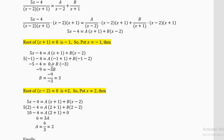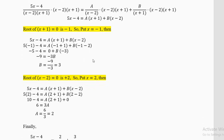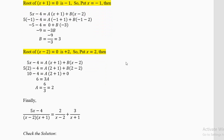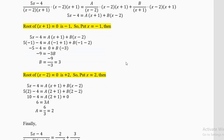To eliminate A, solve x + 1 = 0, giving root x = −1. Put x = −1: A(−1 + 1) = A(0) = 0, so A is eliminated. On the left: 5(−1) − 4 = −5 − 4 = −9. On the right: B(−1 − 2) = −3B. So −9 = −3B, giving B = 3.